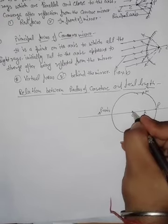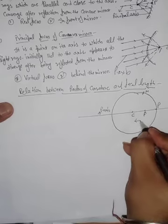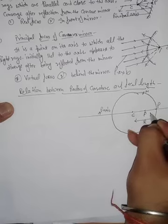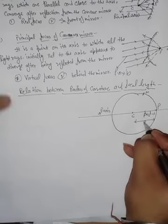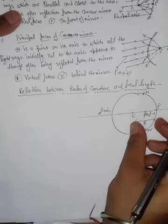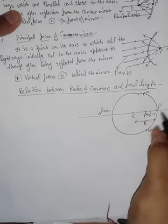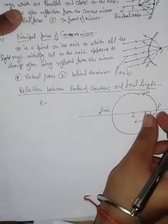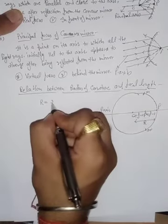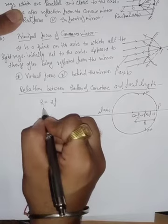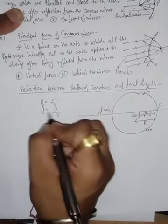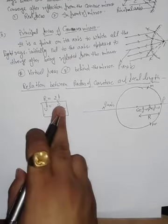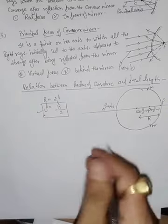The distance from the pole to the focus is the focal length f, and the distance from the pole to the center of curvature is the radius of curvature R. So radius of curvature equals f plus f, which gives us 2f. Therefore: focal length equals radius of curvature divided by 2. This is the relation between radius of curvature and focal length.